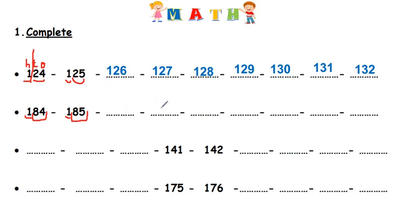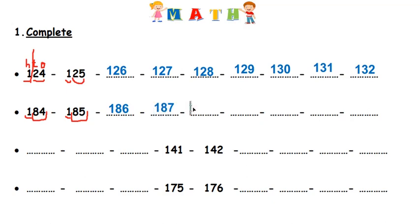And then eighty-six, eighty-seven, eighty-eight, eighty-nine, ninety, ninety-one, ninety-two. I have one hundred for the hundreds place, so it's not difficult. One hundred eighty-six, one hundred eighty-seven, one hundred eighty-eight, one hundred eighty-nine.